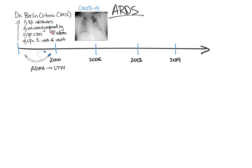The ARMA trial compared a tidal volume of 6 cc's per kilogram and a plateau pressure of less than 30, to a tidal volume of 12 cc's per kilogram and a plateau pressure of less than 50. 861 patients were included in the trial. ARMA demonstrated lower mortality in the 6 cc per kilogram group, 31% vs. 39%.